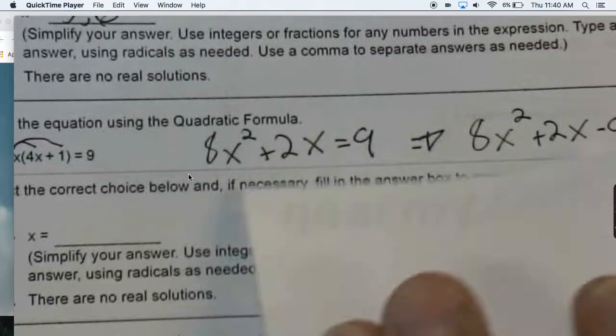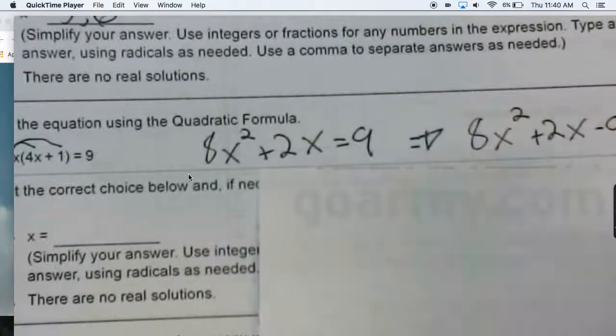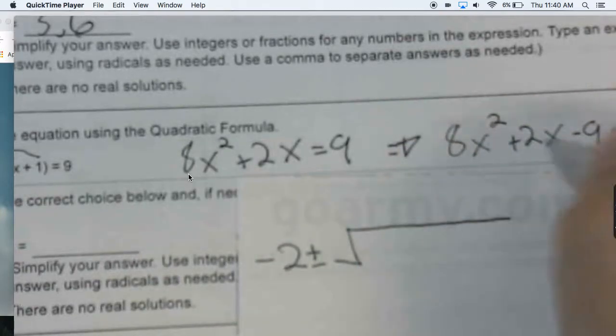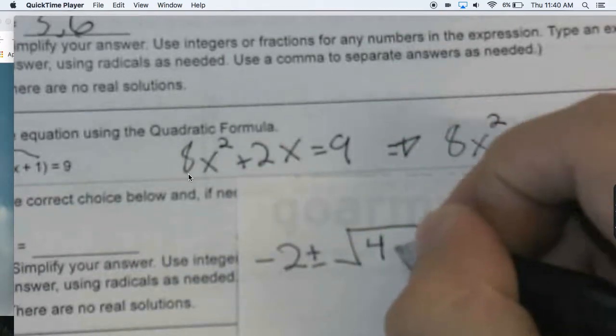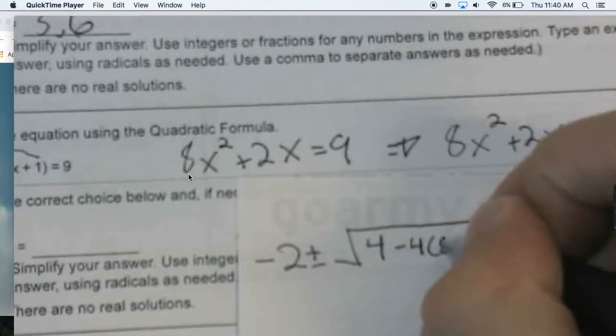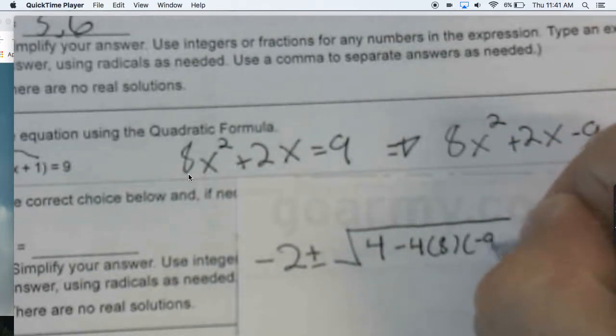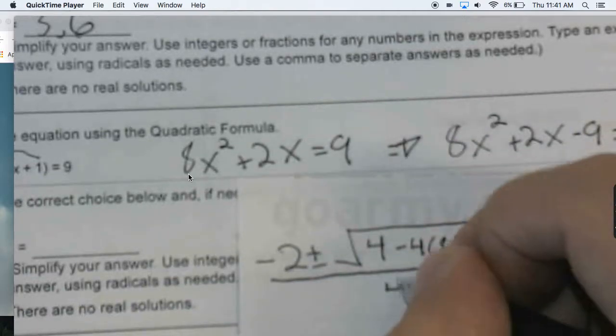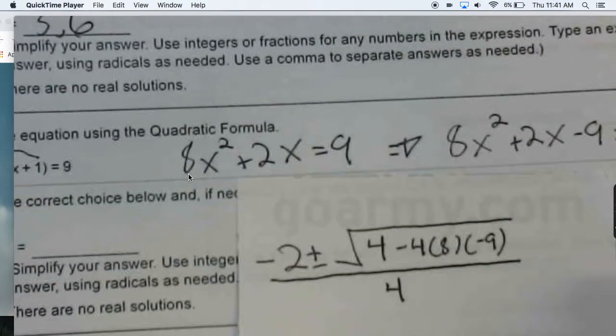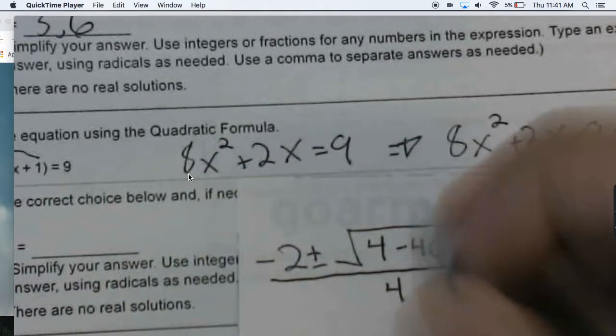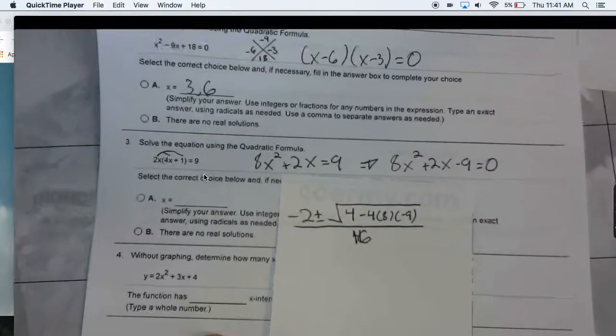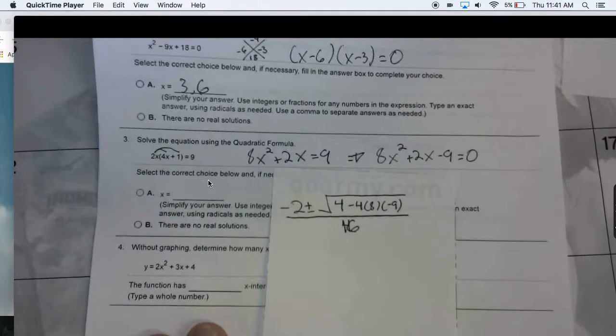If you then go for quadratic formula, you end up with negative 2 plus or minus the square root b squared, which is 4, minus 4 times 8 times c, which is negative 9. And this is all over 2a, so all over 4. Sorry, 16. So we have 16 in our denominator seen here.